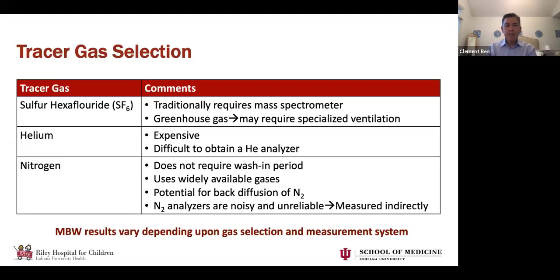Helium is a very traditional choice, but it's actually very expensive. The reason is twofold: helium is used heavily in explosive detectors for homeland security, and most helium is actually collected from nuclear weapons decay, so it's not easy to get. Right now helium is very expensive. It's also difficult to find a helium analyzer precise enough for this application. So in general, people have not been using helium for MBW LCI measurements, although it is used in DLCO to calculate alveolar volume and for FRC measurements.